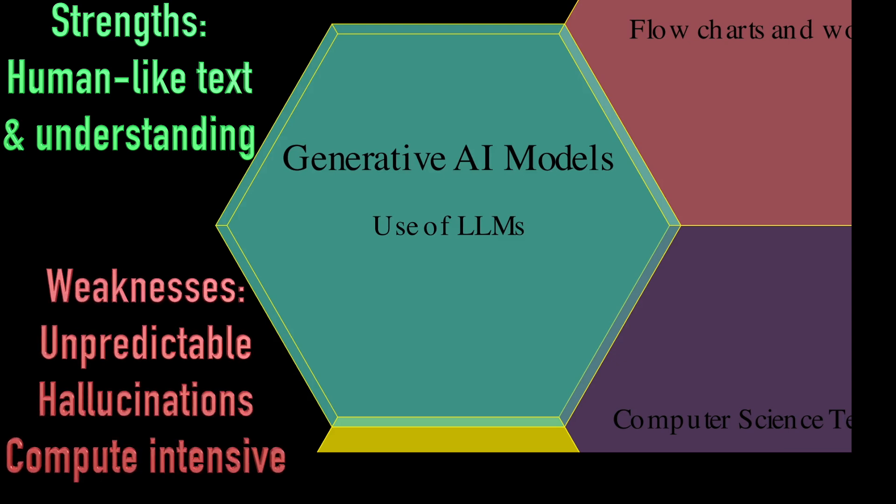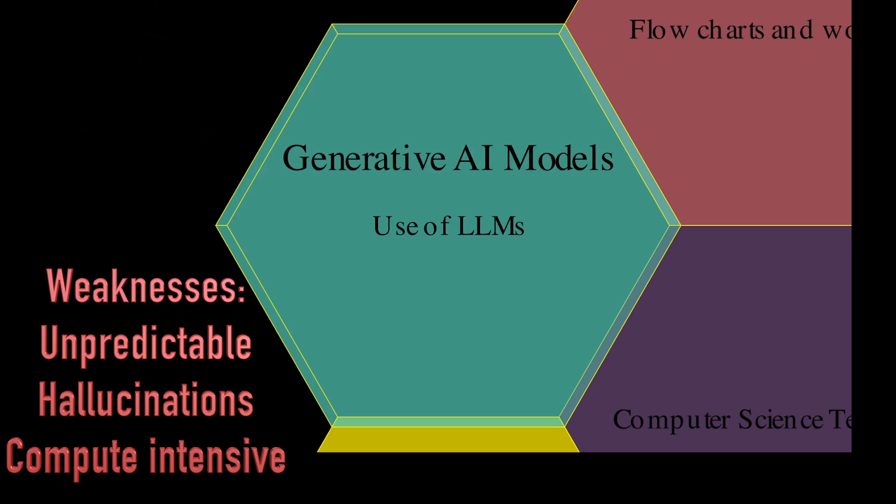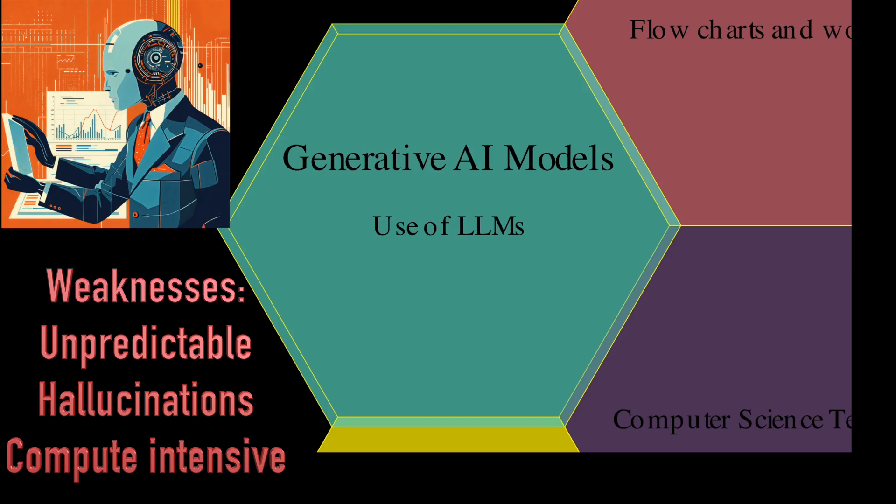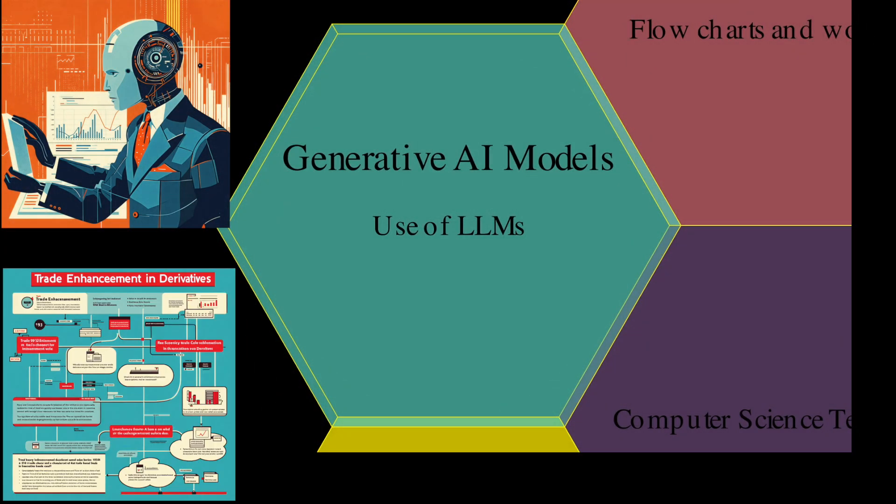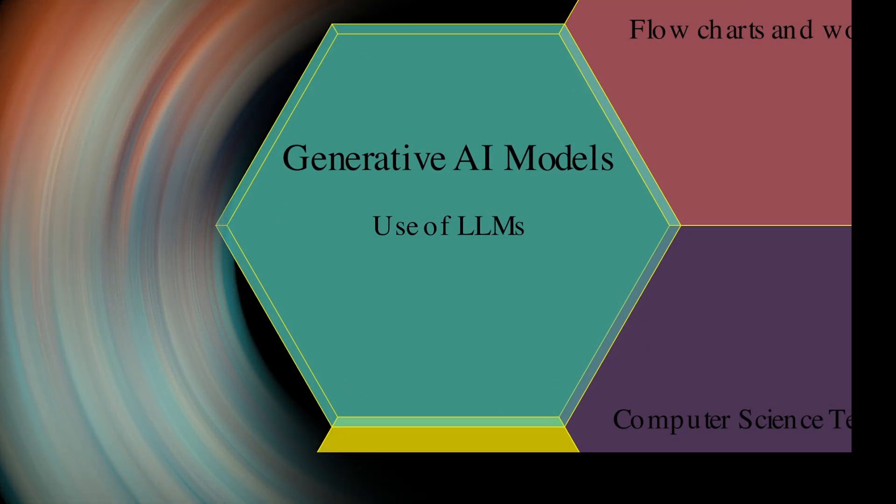They may hallucinate. And they require significant computational resources, particularly to train. They're best suited for content generation tasks like creating earnings report summaries or natural language reporting interfaces. They're less suitable for precise numerical calculations or rule-based decision making.